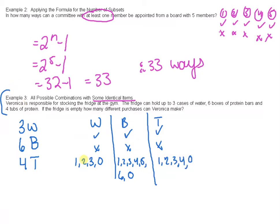So what we do here is we actually, there are four different ways we can buy water. And for the box of protein, there are seven different ways. And with the tubs of protein, there are five different ways, right? One, two, three, four, five.